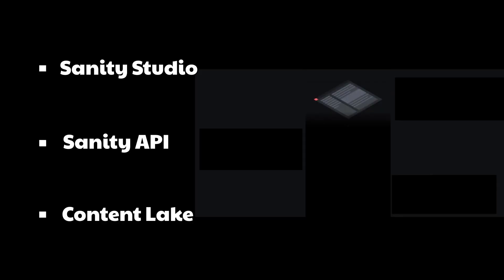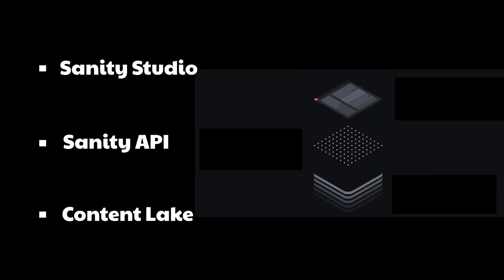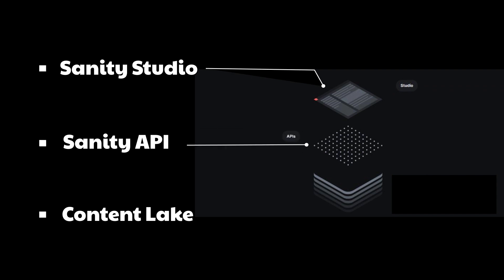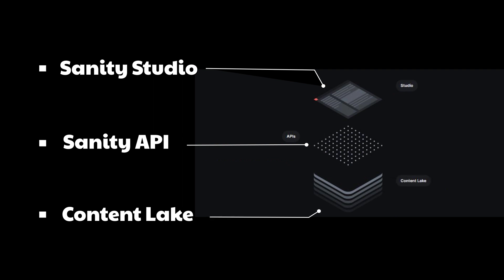Sanity has three essential concepts: Sanity Studio, Sanity API, and Content Lake. Sanity Studio is a customizable UI layer used for interaction with the database. Sanity APIs are APIs used to interact with the database programmatically. Content Lake is Sanity's own database server where all content is stored and processed.